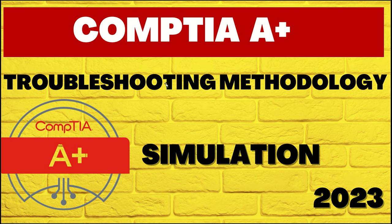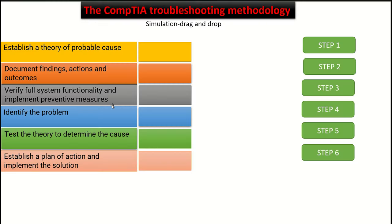In this video, we're going to learn and see the six steps of troubleshooting methodology according to CompTIA A plus. It is a very important part of the exam and we are going to learn the six steps in a bit of detail. It's kind of a simulation as well. Here on the left side, we have the six steps of troubleshooting and they are not in the correct order — we need to drag the correct step to the right description.